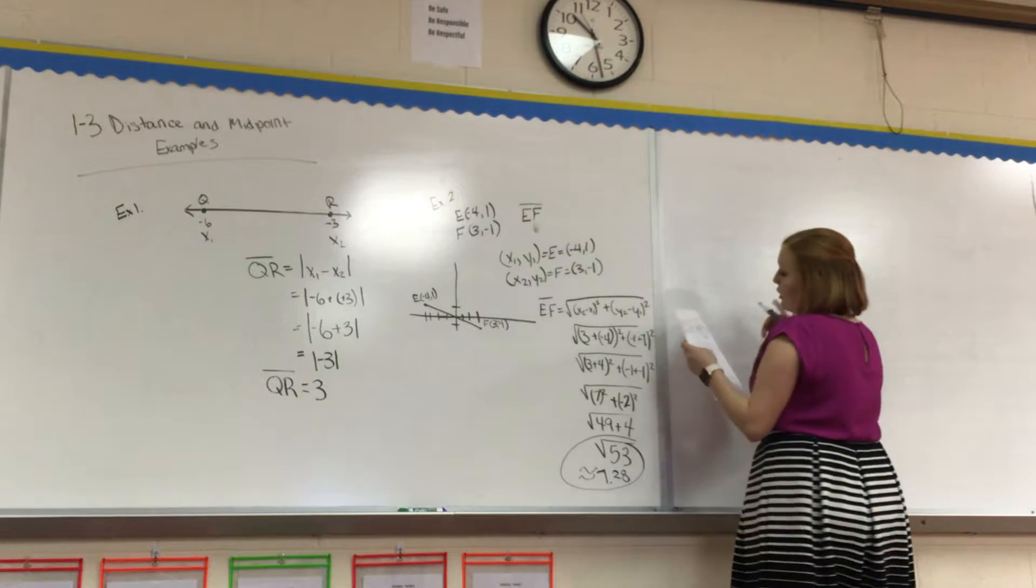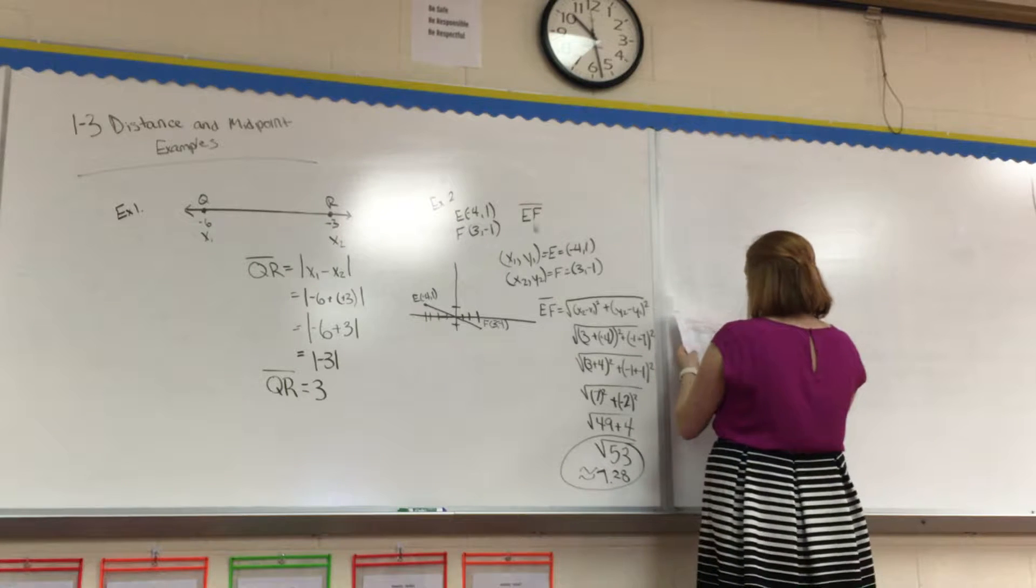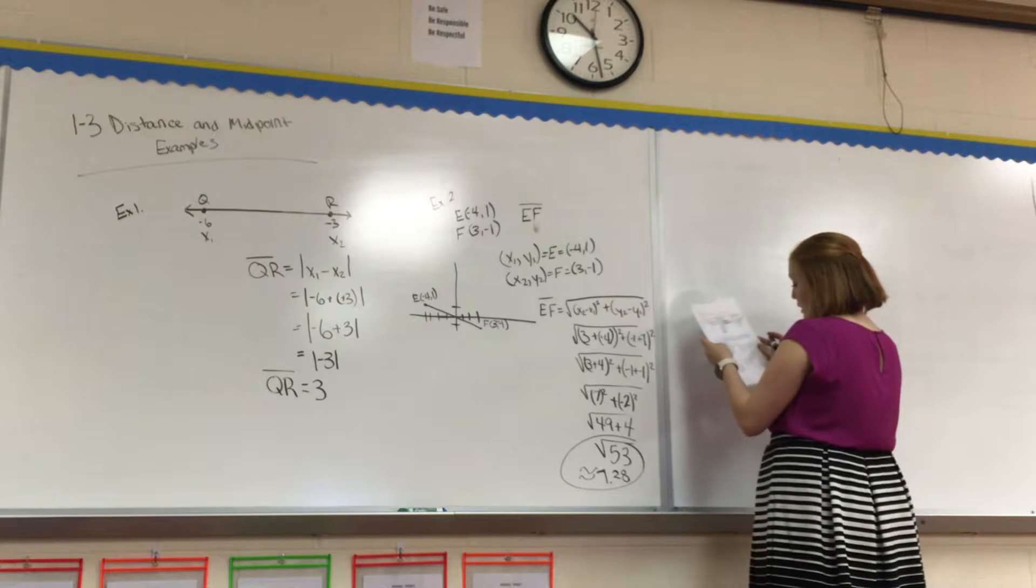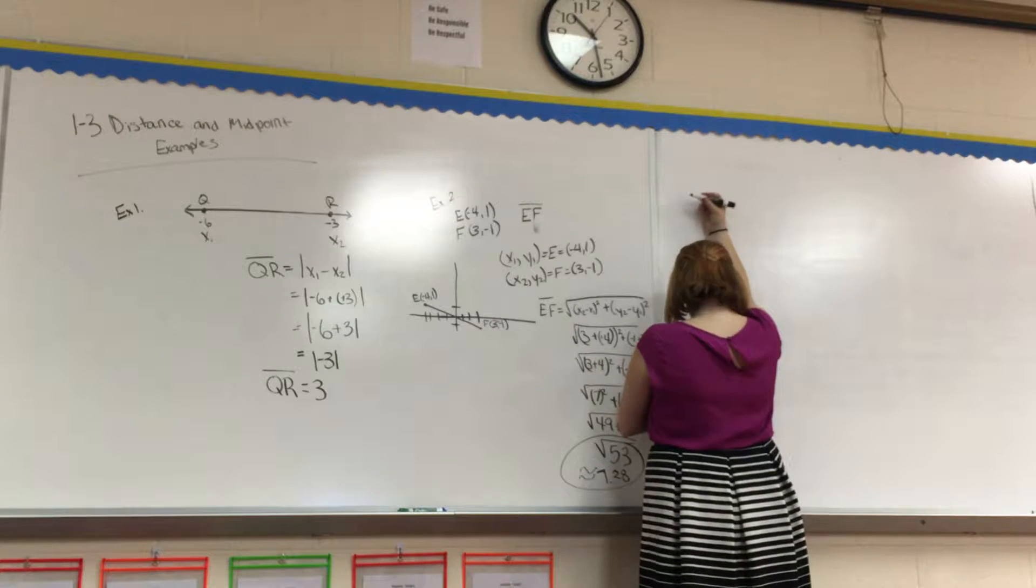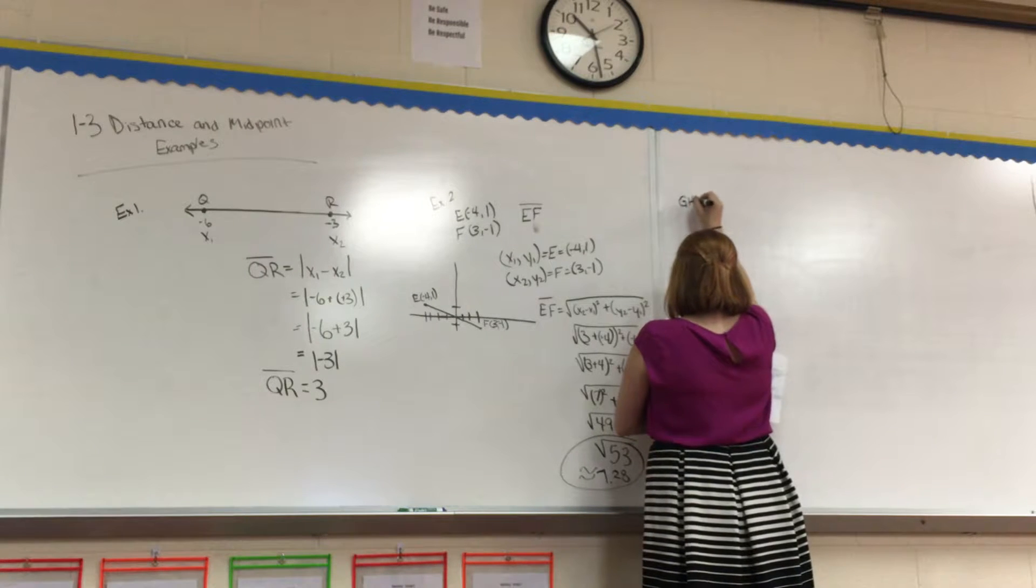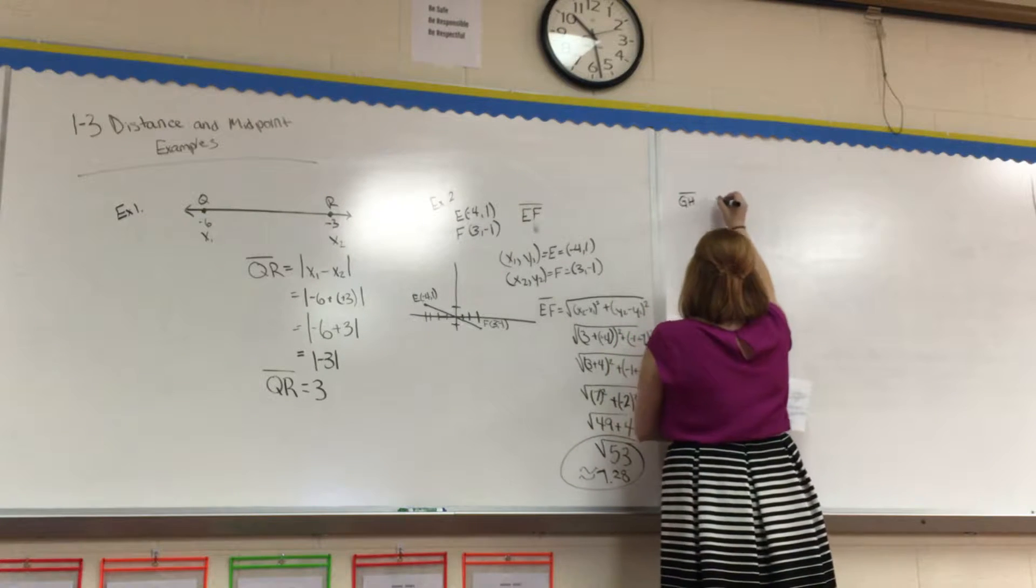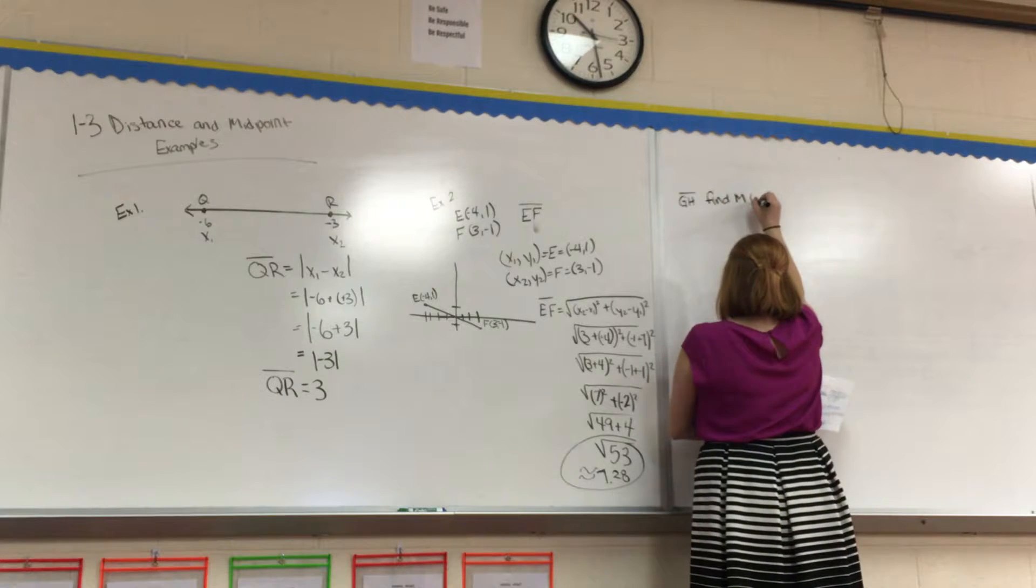Okay, now we're on to the midpoint formula. So, our first one is going to be find the coordinates of M, the midpoint of G and H. So we're trying to find that. We have the segment G and H, and we're trying to find M, which is the midpoint.